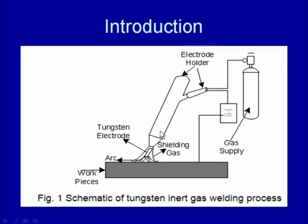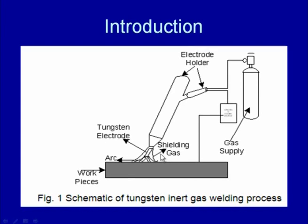The GTA welding system includes one non-consumable tungsten electrode and the base material, with the arc struck between them. The heat generated melts the faying surfaces of the base material and also melts the filler material placed in the arc zone to fill the gap between the plates. One terminal of the power source is connected to the electrode and another to the base material, while inert gas is used to protect the weld pool from atmospheric contamination.